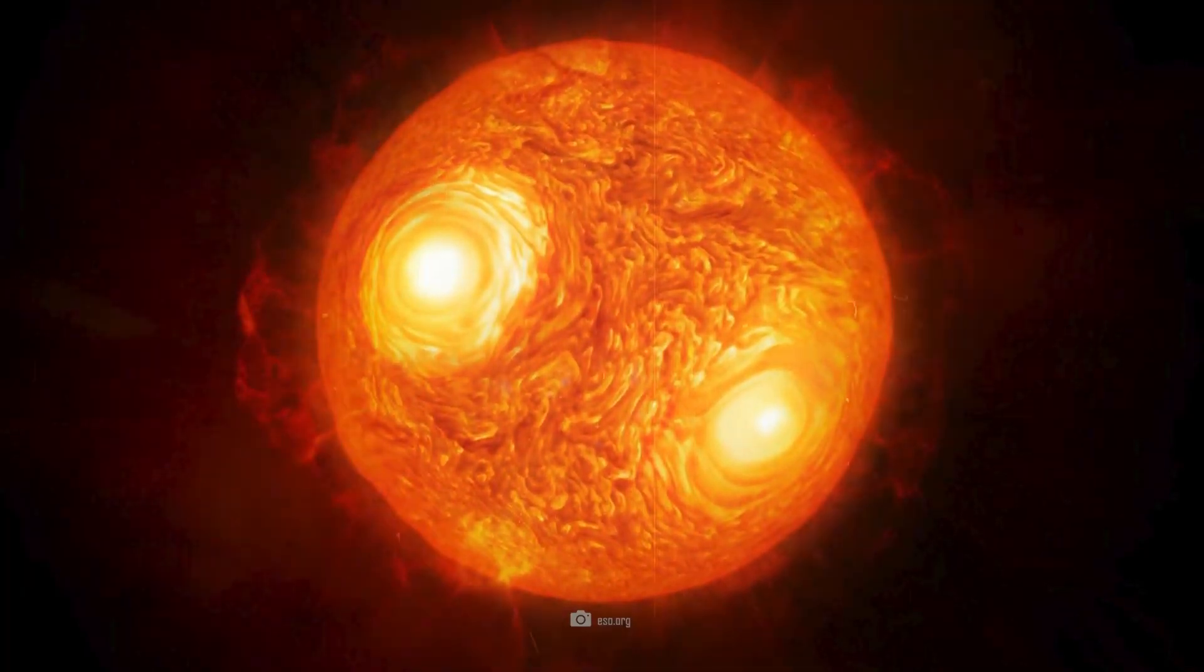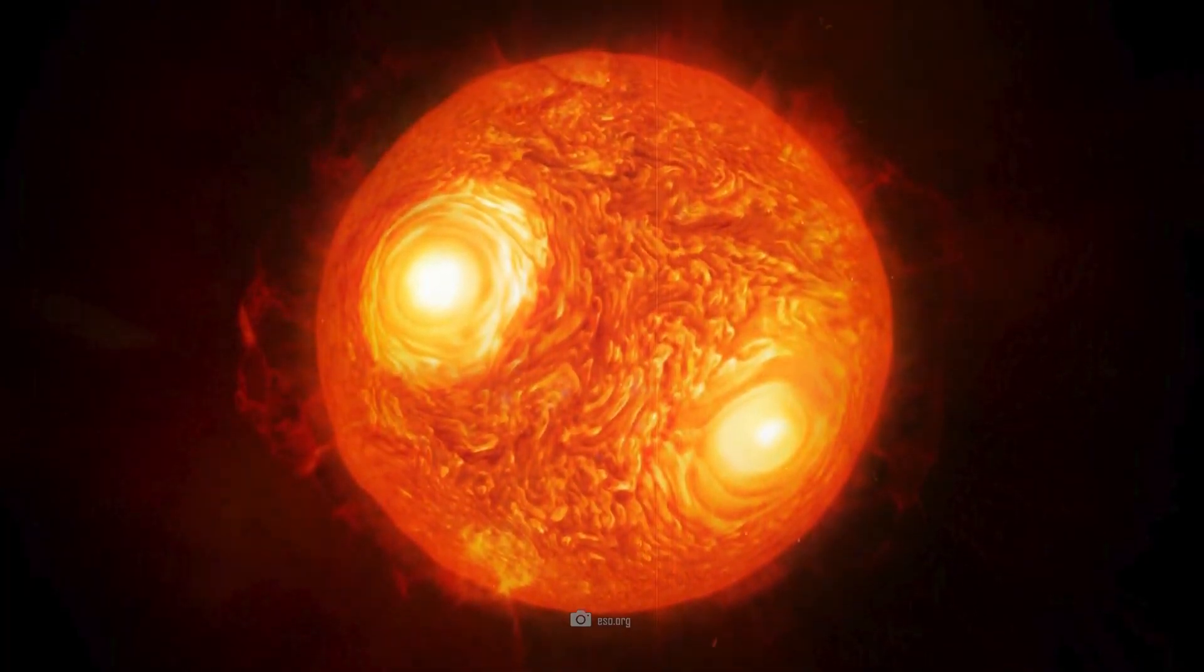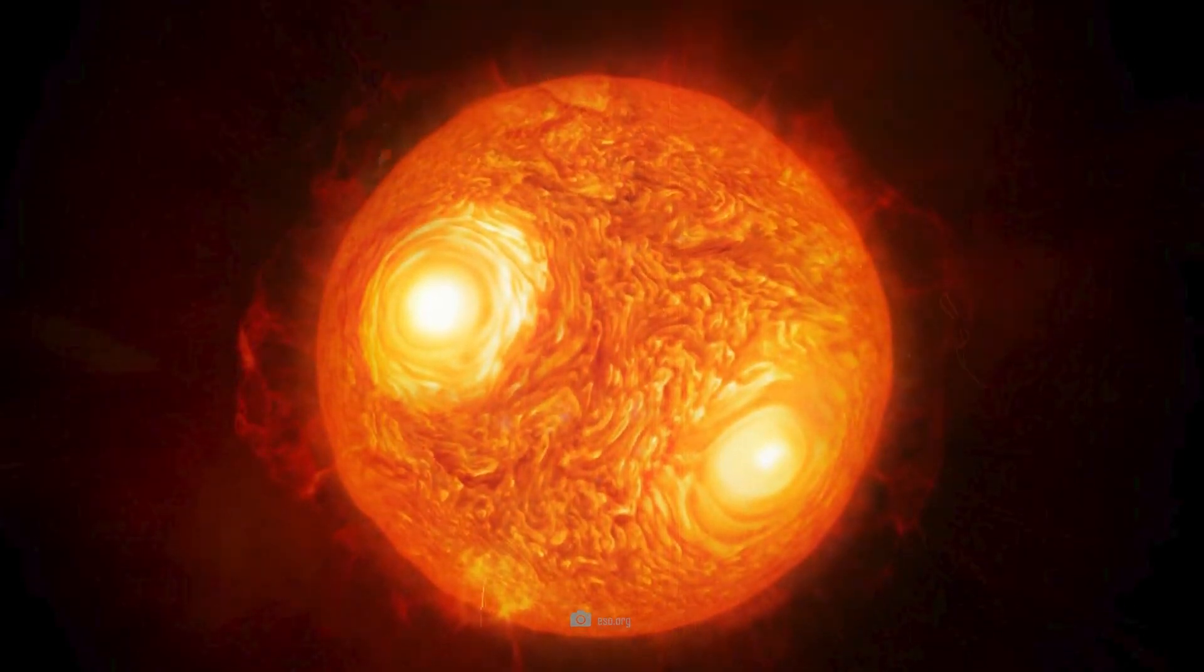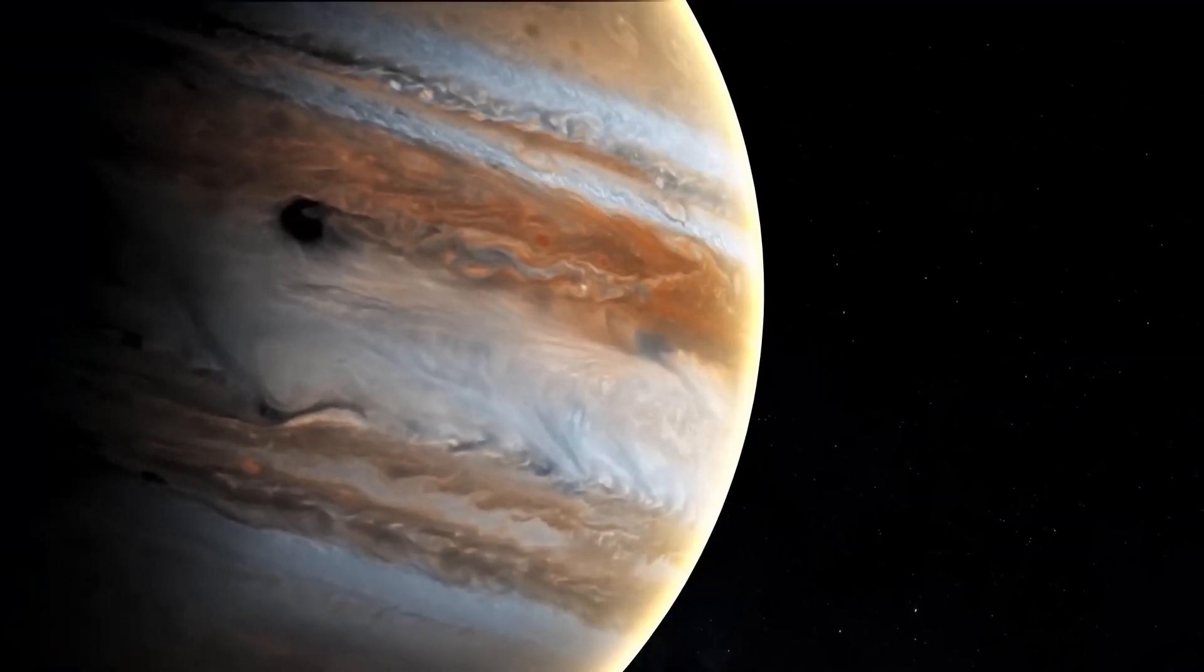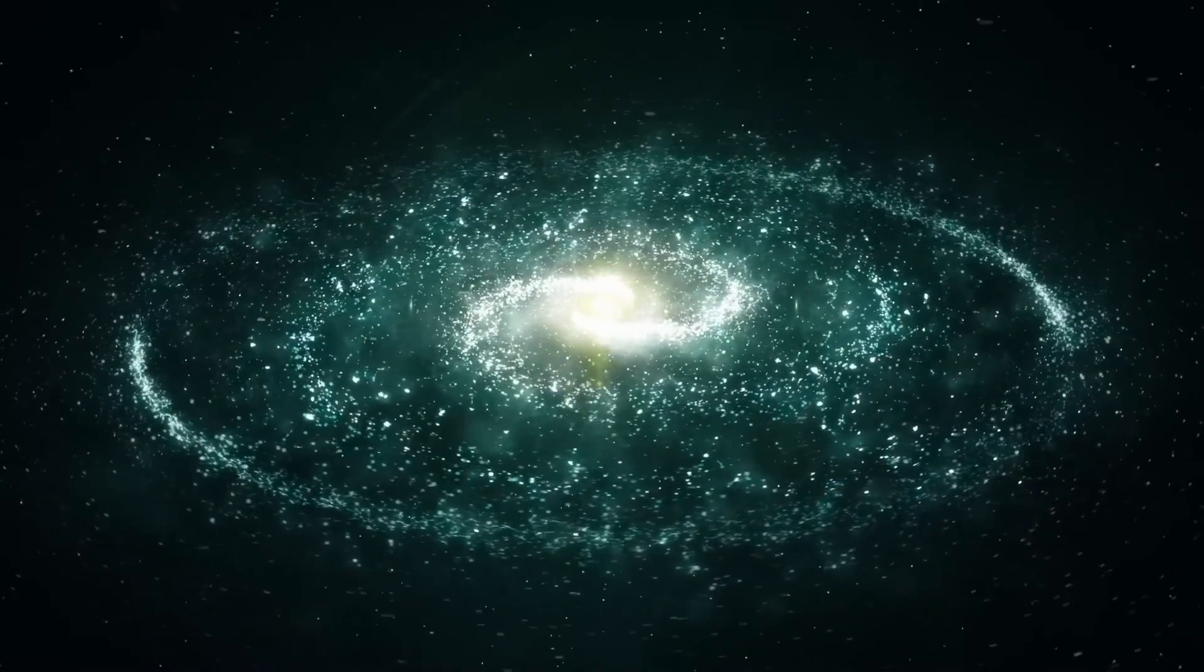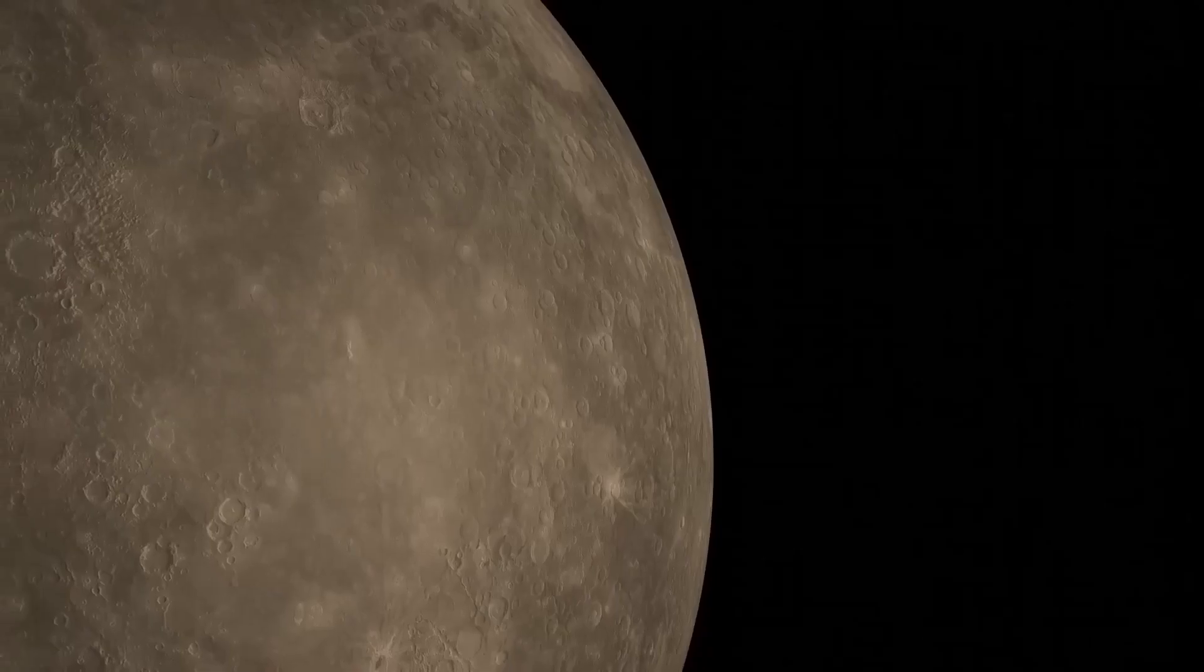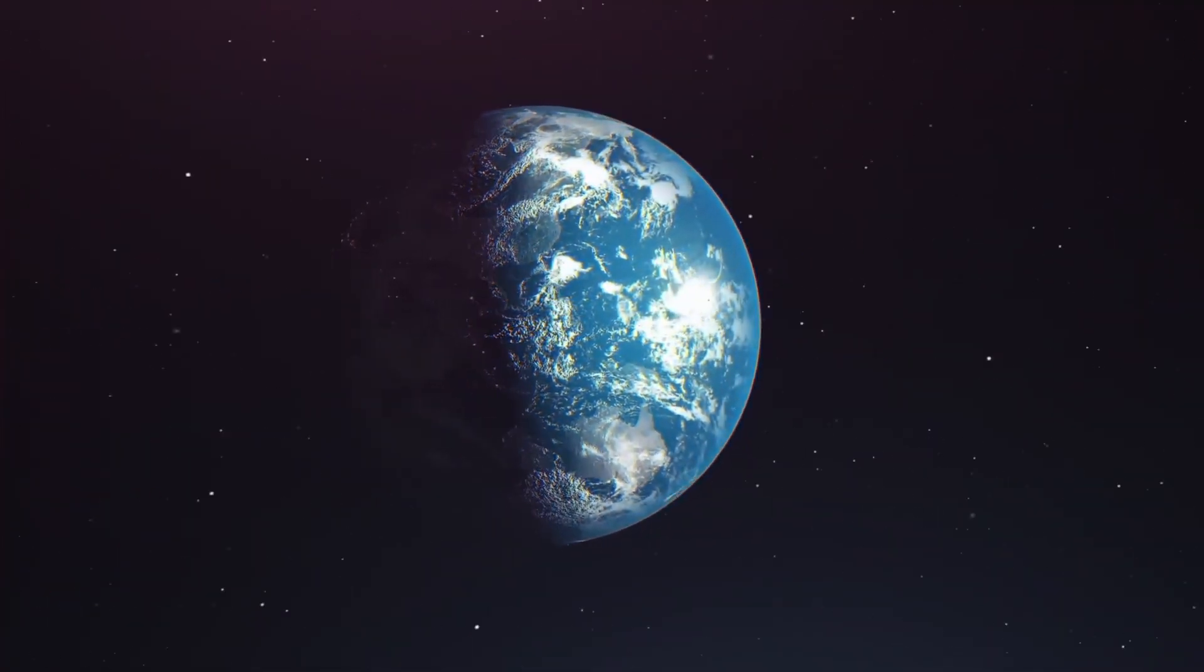The Sun's radius is around 764 times greater than Betelgeuse's. This star will go beyond the asteroid belt and even Jupiter if it were to take the place of the Sun in our solar system. This implies that Mercury, Venus, Mars, and Earth will all be fully absorbed.